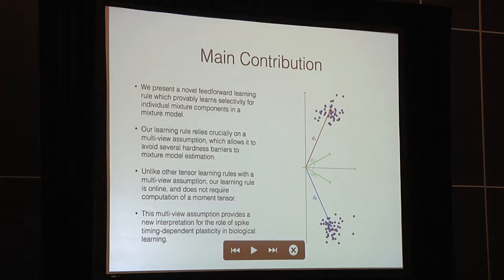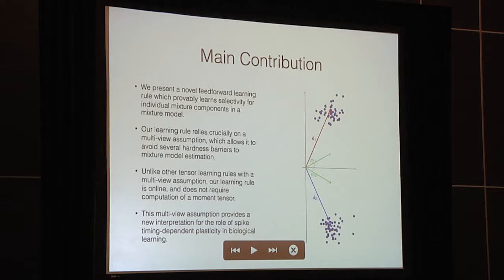The main contribution of this talk is a novel feed-forward learning rule which provably learns selectivity for individual mixture components in a mixture model. This learning rule relies crucially on a multi-view assumption, which allows it to avoid several hardness barriers in mixture model estimation. Unlike other tensor learning rules with a mixture model assumption, our learning rule is online and will not require the computation of any moment tensor. This is ideal for a biological algorithm, and we'll show this multi-view assumption provides a new interpretation for the role of spike timing dependent plasticity in biological learning.